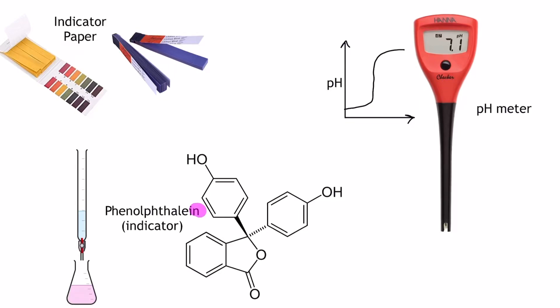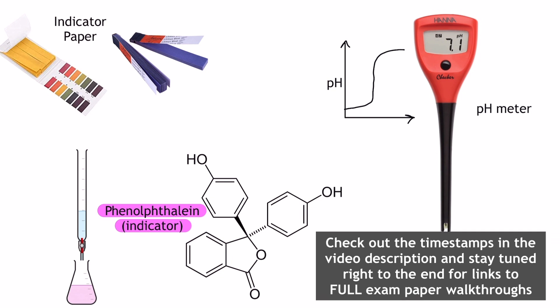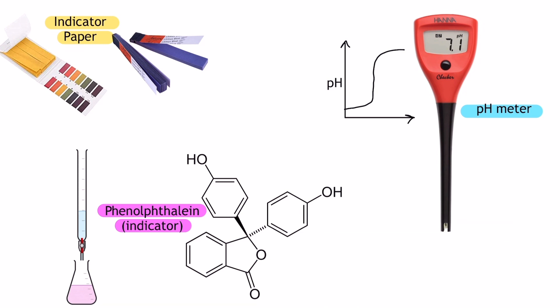pH in A-level chemistry isn't all just about calculations. You also need to be aware of the different ways we can either qualitatively or quantitatively measure the pH of a solution. In this video, I'll cover three common ways that we can do this in a lab, and I'll use examples from your chemistry A-level.